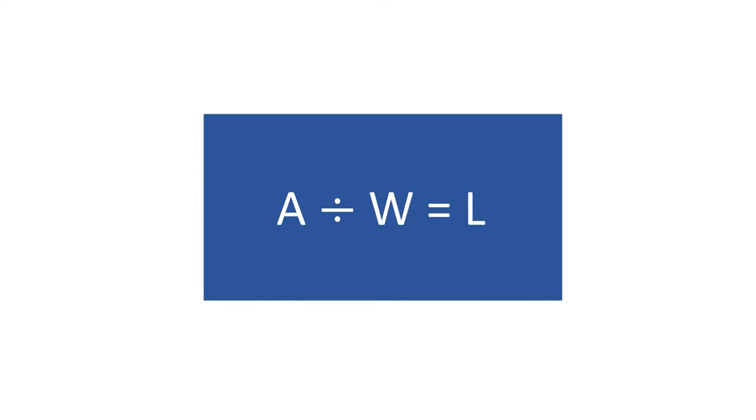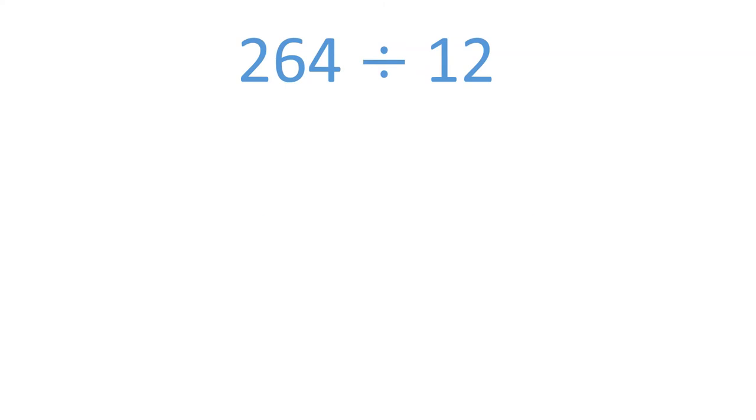Here is a division problem: 264 divided by 12. If we put this in an area model, it would look like this. The total is 264 and the width is 12. The missing number represents the length.